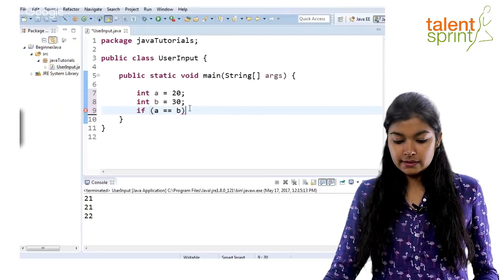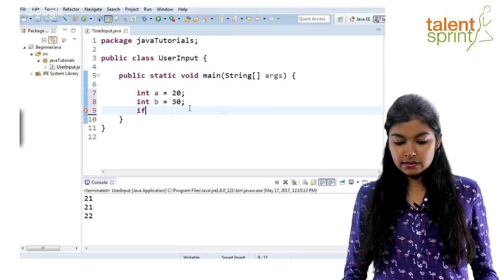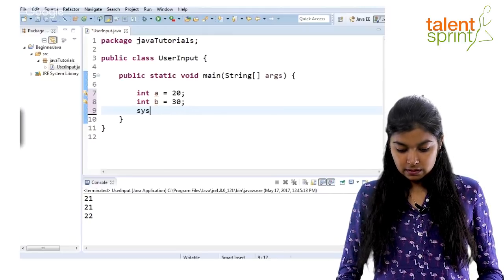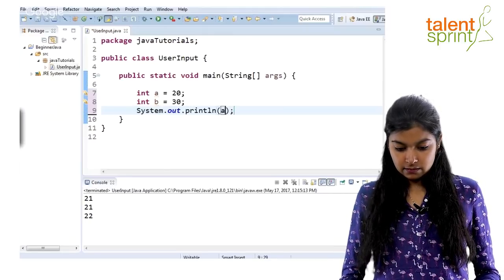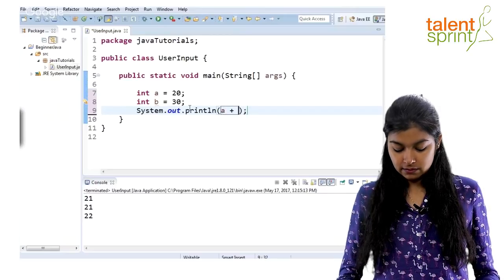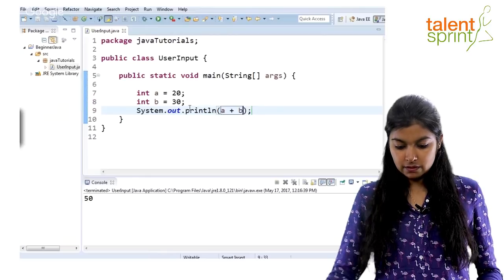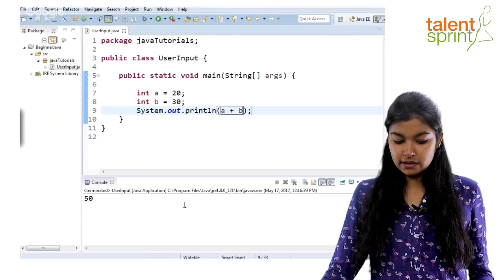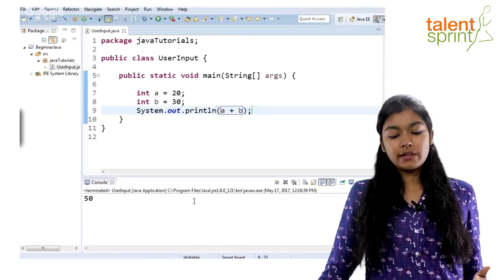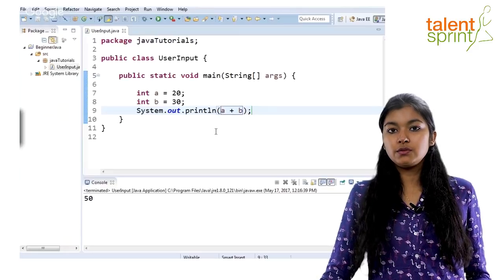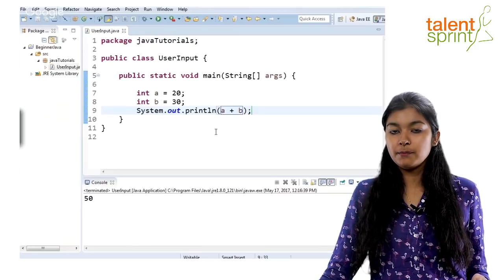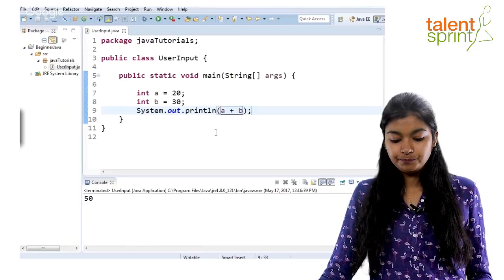Unary operators we have already seen. Arithmetic operators is again fairly simple. You say system.out.print and just give A plus B. This will give you the output 50. So all these operators we will keep using henceforth in our programs which we further see. So we will see how we use all these operators further down when we write more programs in our upcoming videos.